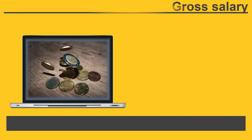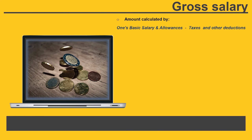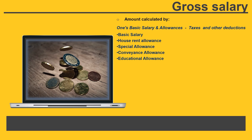Component number two: gross salary. This amount is calculated by one's basic salary and allowances minus taxes and other deductions. This involves basic salary, house rent allowance, special allowance, conveyance allowance, educational allowance, medical allowance, leave travel allowance, etc.